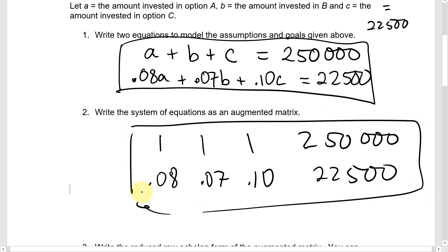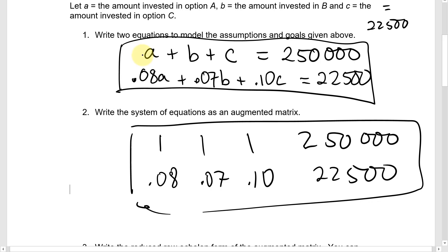That's the augmented matrix, which we can now use a calculator to solve. Notice that we have three variables and only two equations, so that means there are infinitely many solutions when there are more variables than equations to constrain them. We're going to write a general solution and go from there.